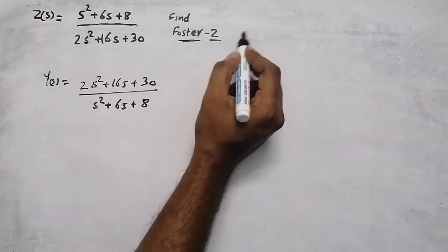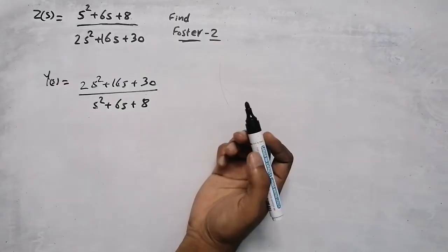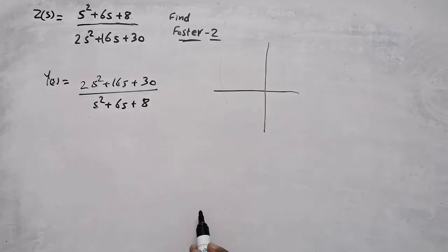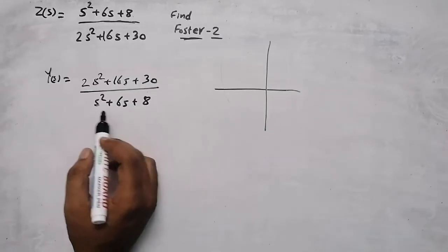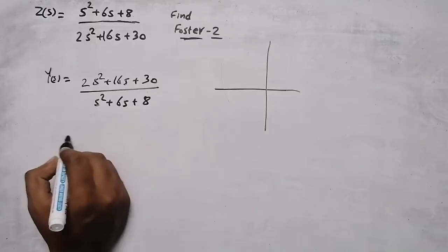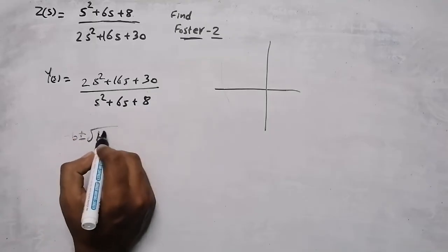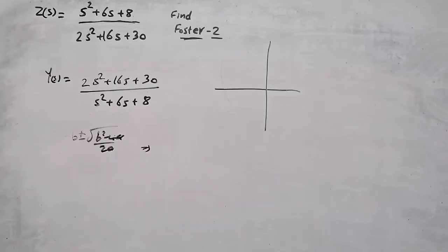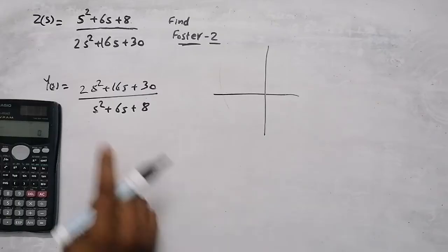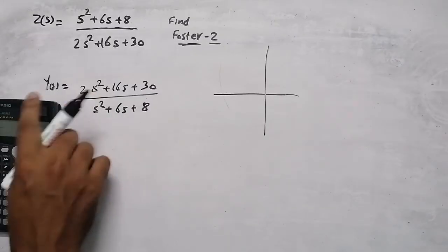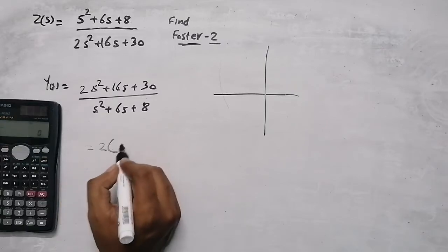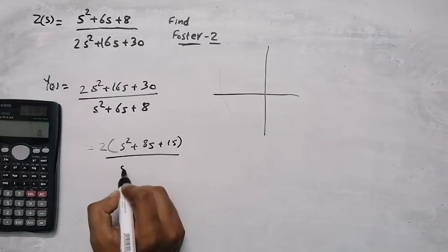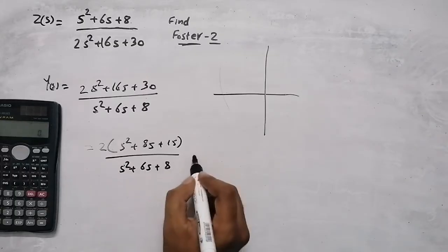Now we don't know which network it is — sometimes it will be mentioned in the question, but if it isn't, we need to draw the pole-zero plot. To do that, we need to factor the expression. Since the order of s is 2, we can use the quadratic formula or solve in a calculator. Here the coefficient of s² should be 1, so take 2 outside, giving us s² + 8s + 15 divided by s² + 6s + 8.